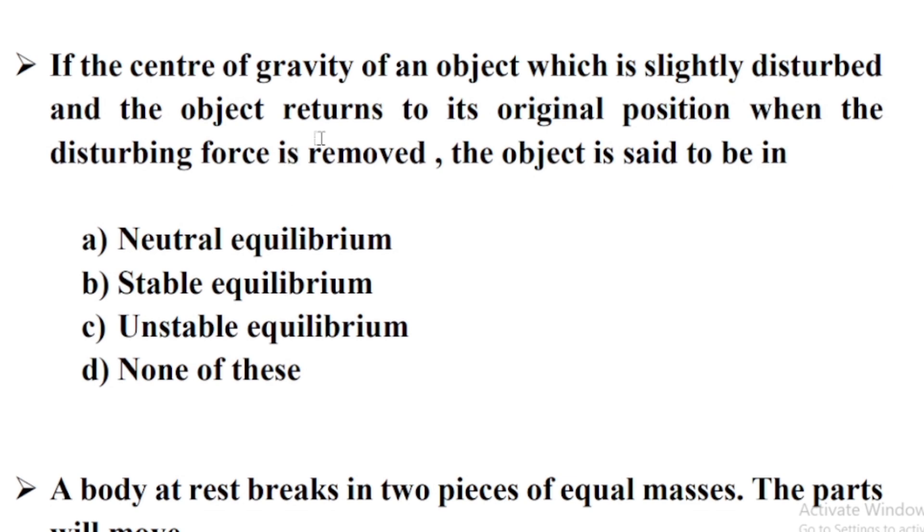If the center of gravity of an object which is slightly disturbed, and the object returns to its original position when the disturbing force is removed, the object is said to be in Option B. Stable equilibrium.